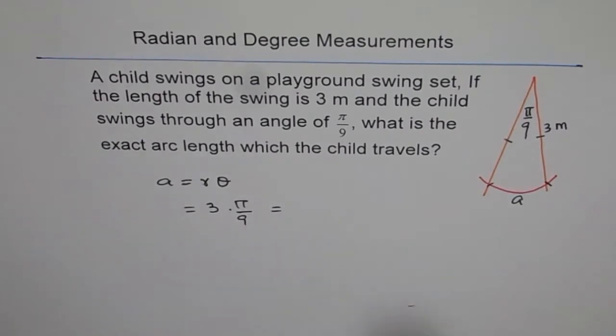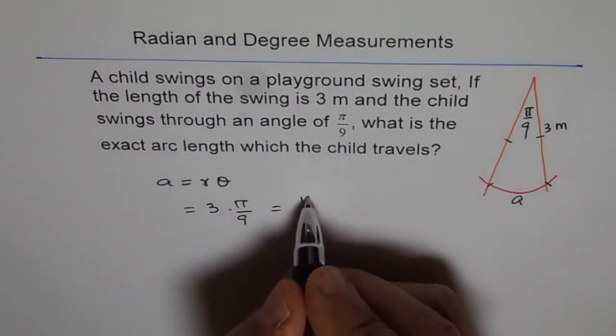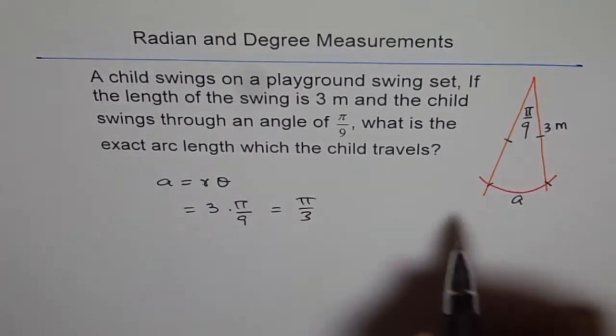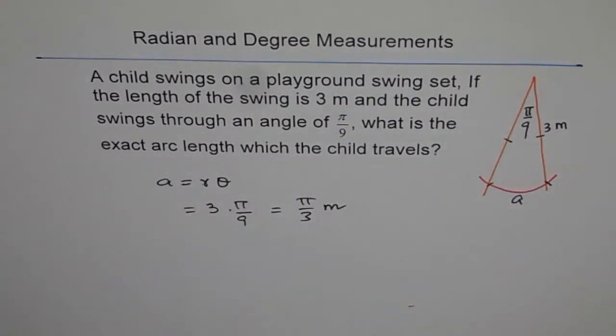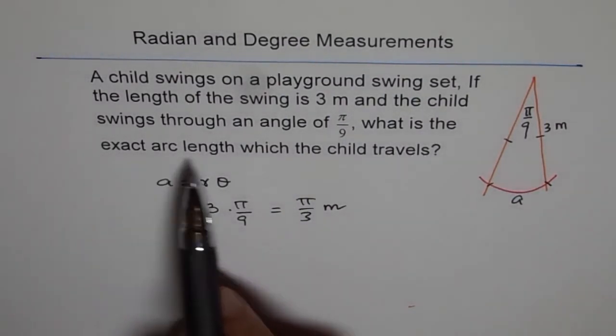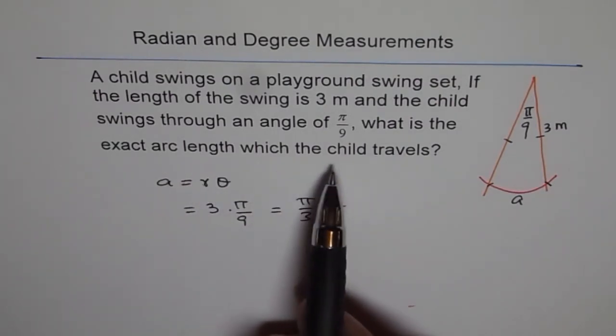Since we need exact answer, we will write π by 3 and the units are meters. So that is the exact length of arc length through which the child travels.